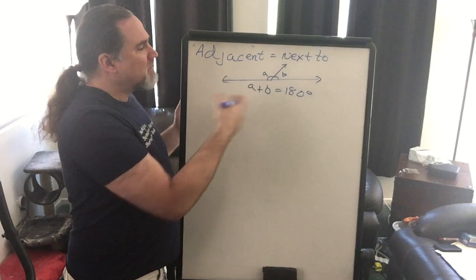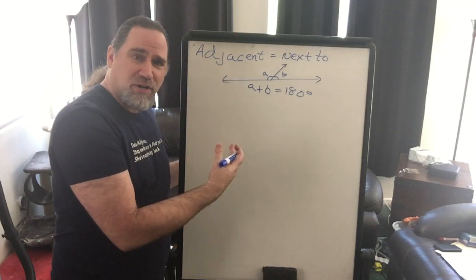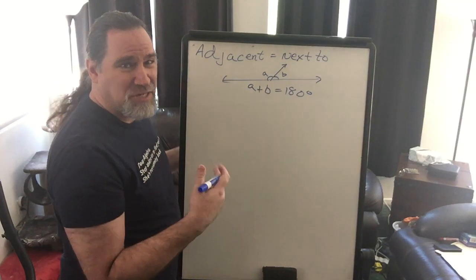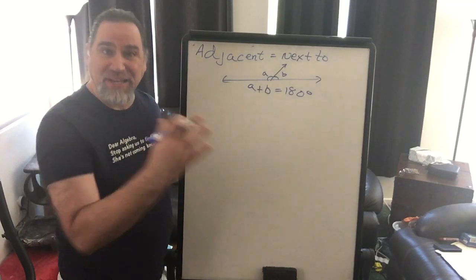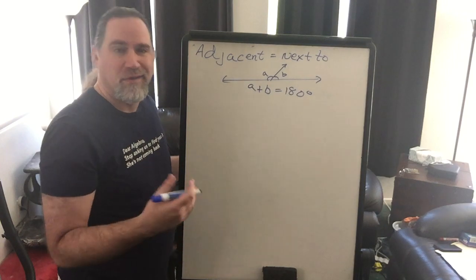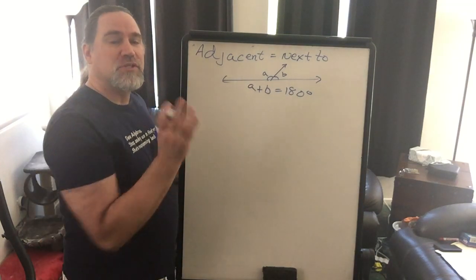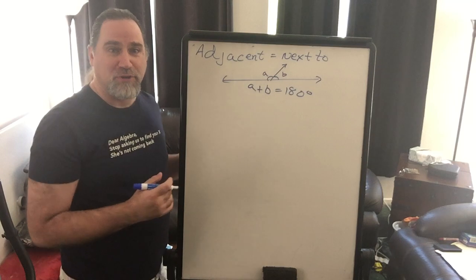That's why we want to know that term. We want to know it when it comes up, and you'll see it again in higher levels of math, when you get into trigonometry. Adjacent becomes kind of an important word, especially for angles.